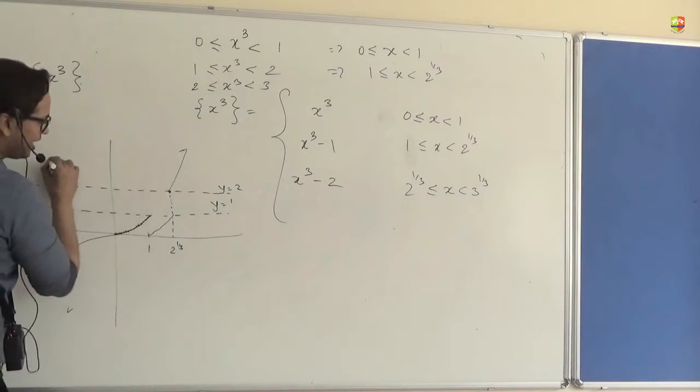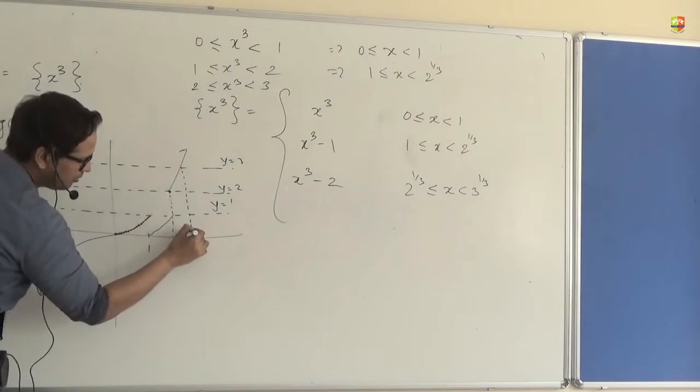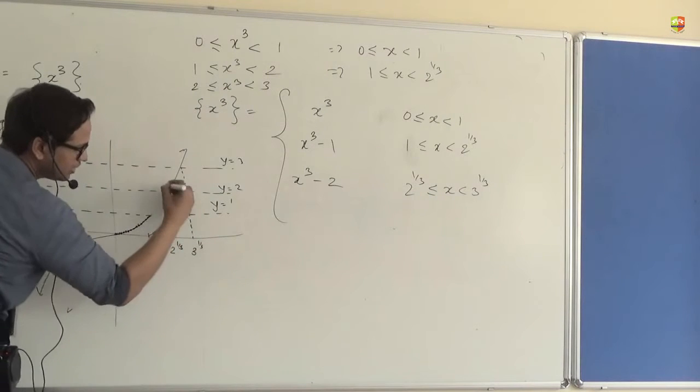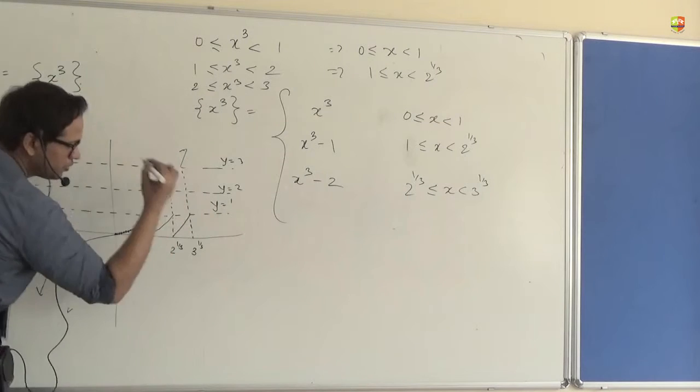Similarly, if I draw a line y equal to 3, please note that this point will be cube root of 3. So this part will be dropping by 2. Understood?